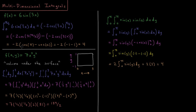We get −2 times [cos(3·π/3) − cos(0)], which is −2 times [cos(π) − cos(0)]. cos(π) = −1 and cos(0) = 1, so we have −2 times (−1 − 1), which is −2 times −2, giving a final result of 4 for this definite integral.